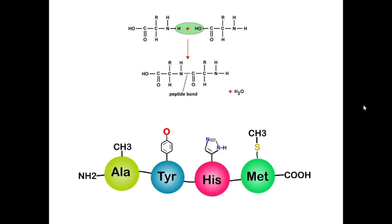This is the primary structure — a chain of amino acids. Here I have included only four amino acids for representation: alanine, tyrosine, histidine, and methionine, which are linked to form a short polypeptide chain. In protein molecules, the number of amino acids and their sequence actually determines their final structure. This represents the primary structure of a protein molecule.